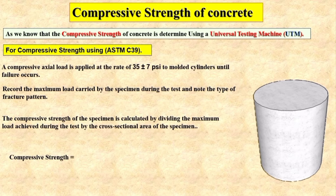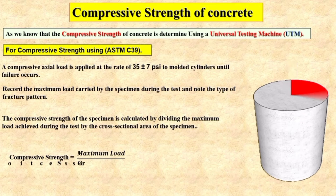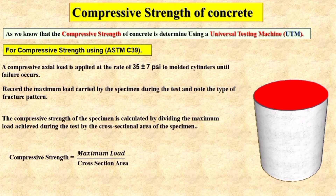We find the compressive strength of the cylinder by dividing the maximum load carried by the specimen during the test by the cross-sectional area of the cylinder. From this equation, we can find out the compressive strength of the concrete.